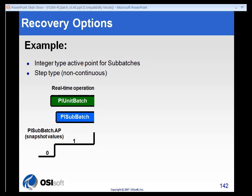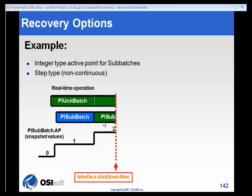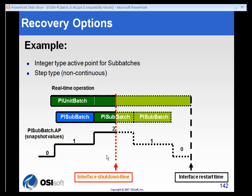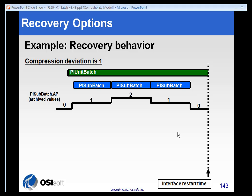Here we have an example of a recovery situation where we have a running unit batch and a running sub-batch. The active point is a stepped tag and we are in the middle of our first sub-batch running under our unit batch. As we watch it progress, the unit batch continues and we are into our second sub-batch when the interface gets shut down. As the situation progresses, we see that the second sub-batch stopped and the third sub-batch was created, but we missed that because the interface was down. When the interface restarts, the unit batch is closing out. We need to go back and look at what happens when we recover that data, because we have to go to the archive to recover it — and the compression deviation is important.